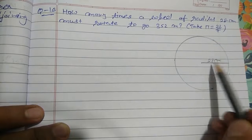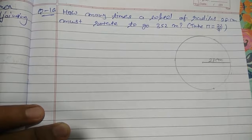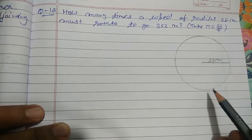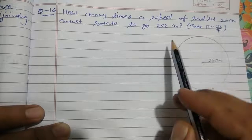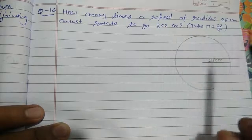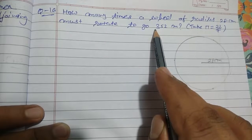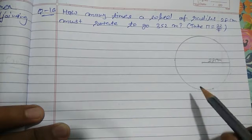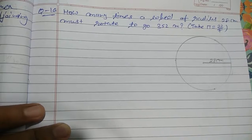We have the radius, so we can find the circumference of the wheel. Then we divide the total distance by the circumference to get the number of rotations.